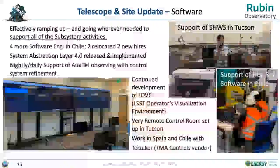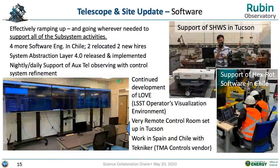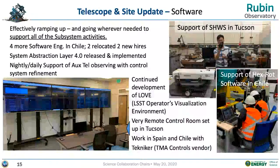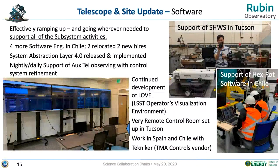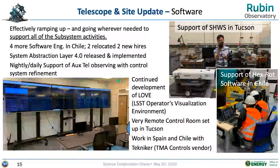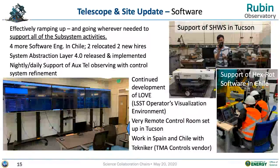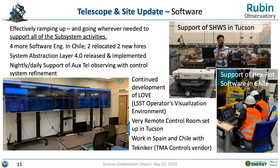Software systems on the telescope and site continue to improve. The System Abstraction Layer (SAL) has a stable release that's fully implemented and being deployed across the entire suite of subsystems. One issue we face is that some software developed by vendors used a previous version of the SAL, and since we now own those software deliverables, we are having to update them to current versions.